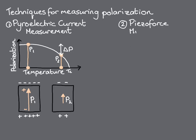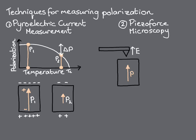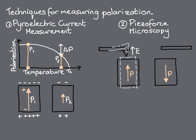A second technique is piezo-force microscopy. Here, an electric field is applied to a polar material using a conductive tip on the end of a cantilever. The electric field deforms the polar material through the piezoelectric effect, and the deformation is detected as it in turn deflects the tip. Opposite orientations of the polarization relative to the electric field cause opposite deformations and deflections, making piezo-force microscopy particularly suitable for imaging ferroelectric domains. It does not, however, provide a measure of absolute values of polarization.